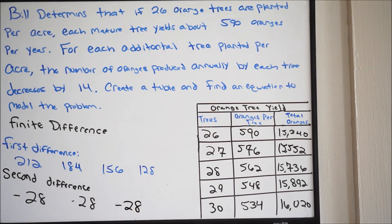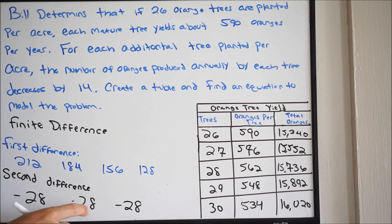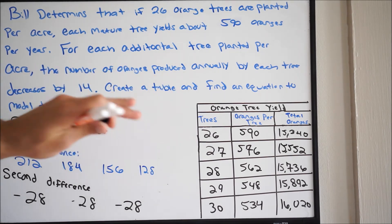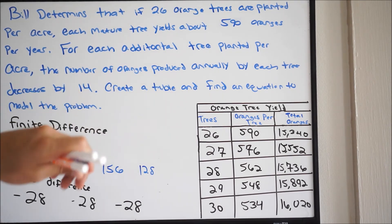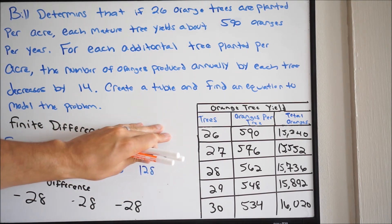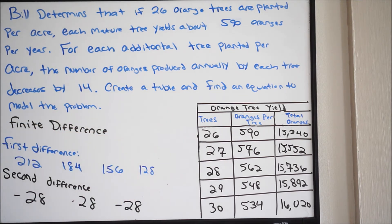Look what happens here — all of our numbers are the same. Meaning the second difference worked out. We've got negative 28, negative 28, negative 28 — they're the same. So if the second difference worked out, we know that this is going to be a quadratic. That is the relationship we're dealing with here — not linear, but quadratic.